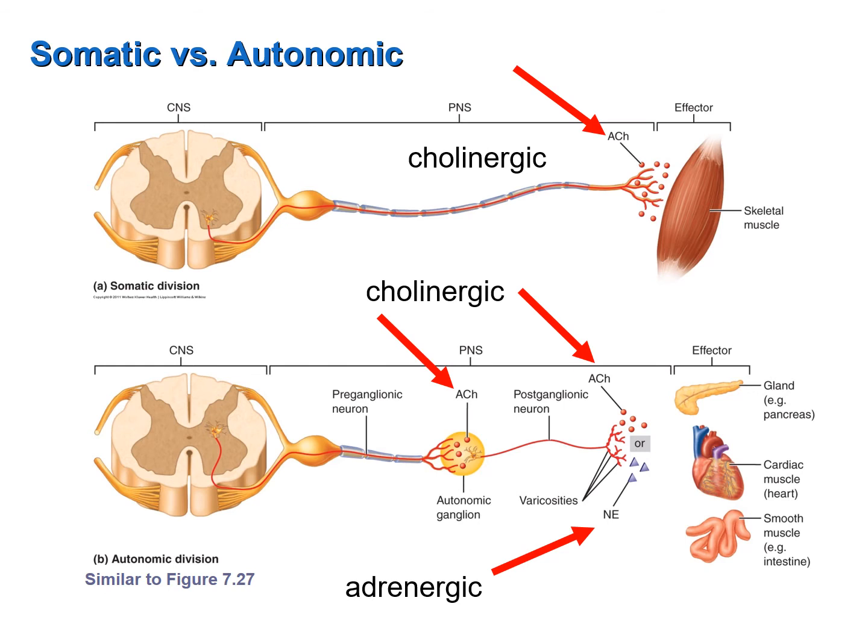Nerve fibers that release norepinephrine are referred to as adrenergic nerve fibers. In the autonomic division, all preganglionic nerve fibers are cholinergic, some postganglionic fibers are cholinergic, but many postganglionic nerve fibers are adrenergic.